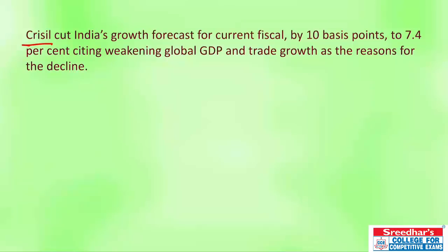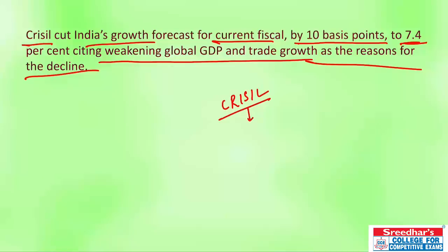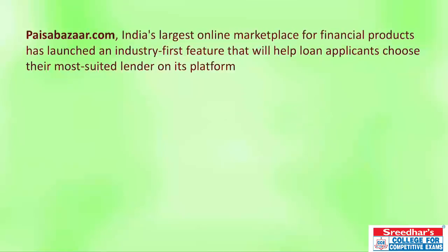CRISIL, a credit rating organization, has forecasted that India's growth rate for the current fiscal will decrease by 10 basis points due to weakening global GDP and trade growth. CRISIL stated the decrease in India's GDP forecast is because worldwide GDP is weakening as trade growth is not as expected.